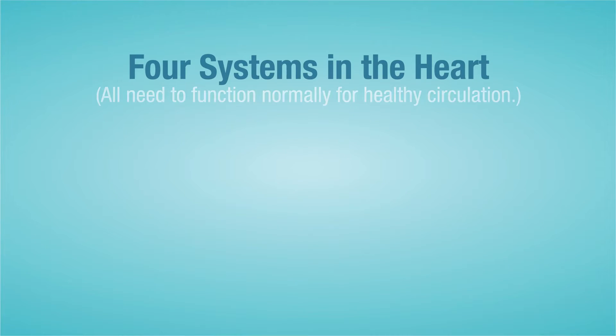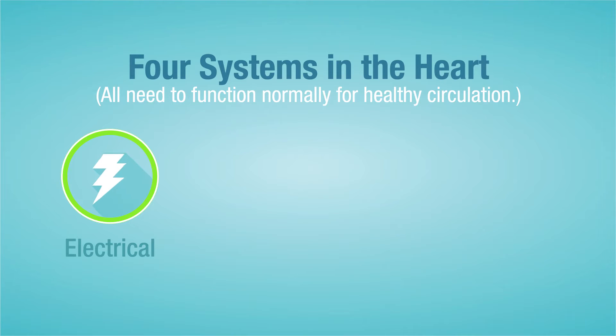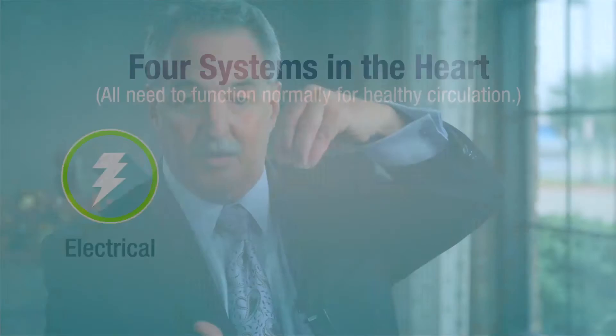Let's call the first one the electrical system. It tells the upper chambers when to lub and the lower chambers when to dub in synchrony like this, so that the heart can function in a normal manner.